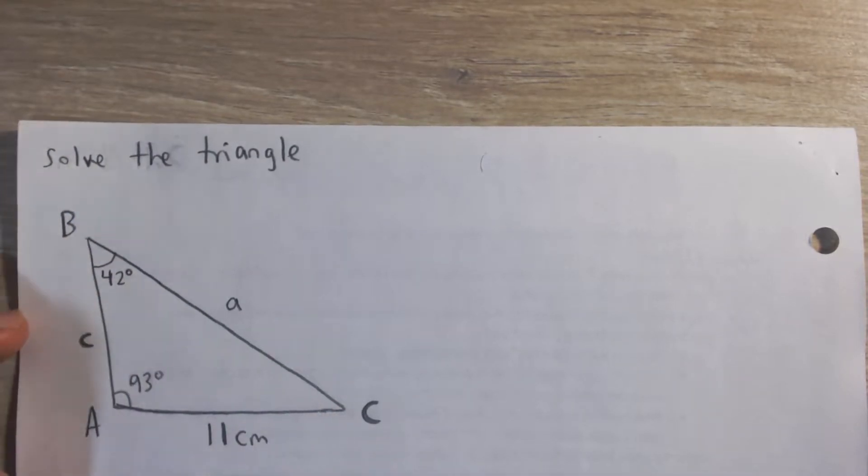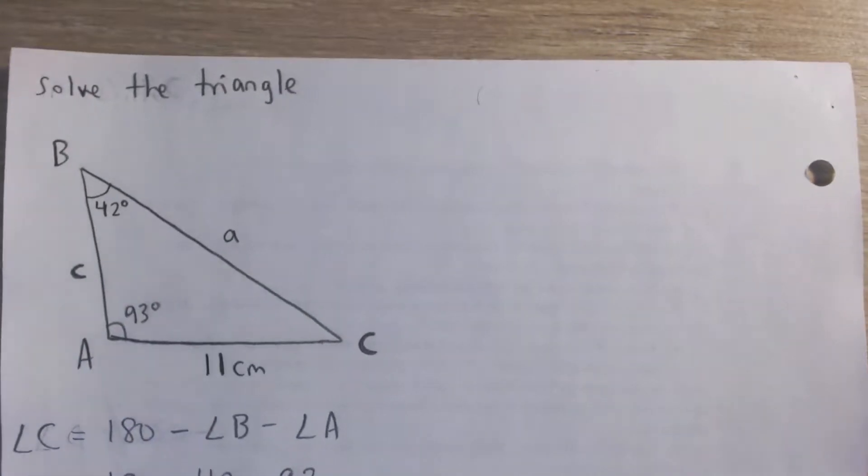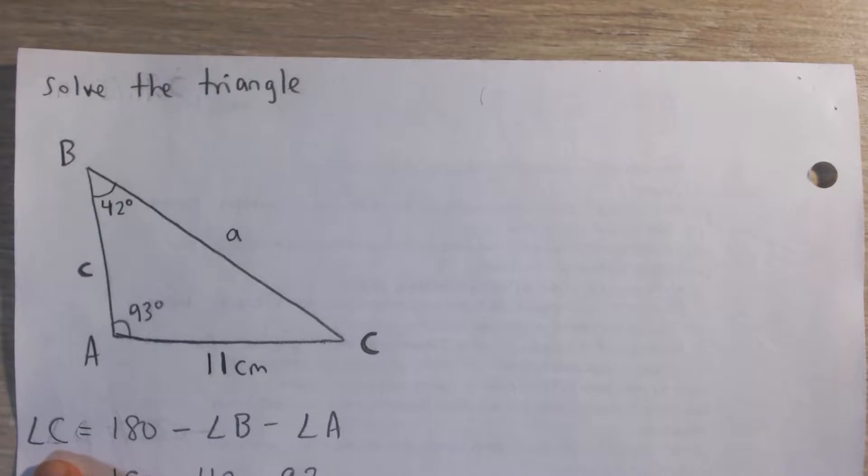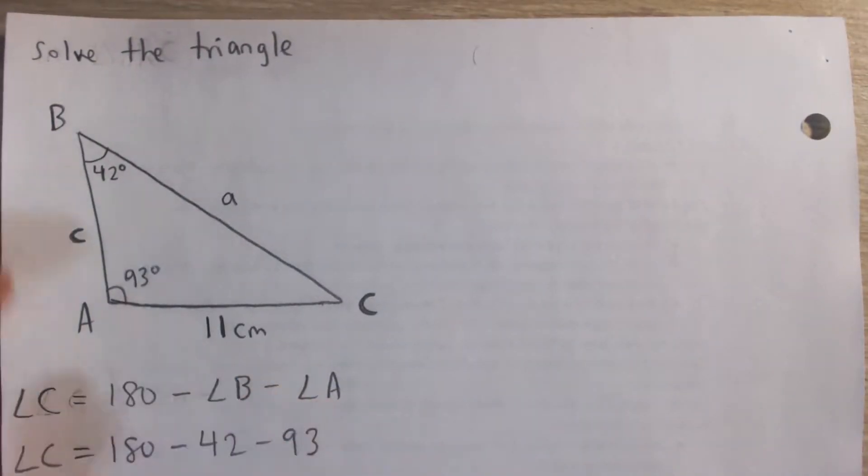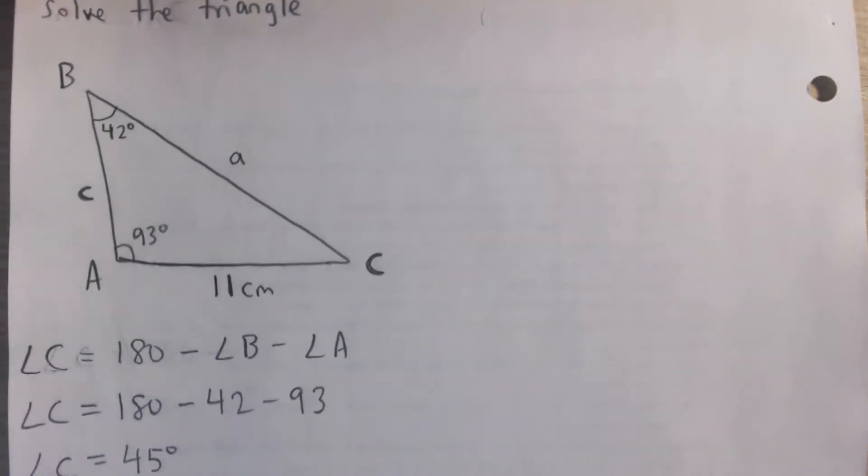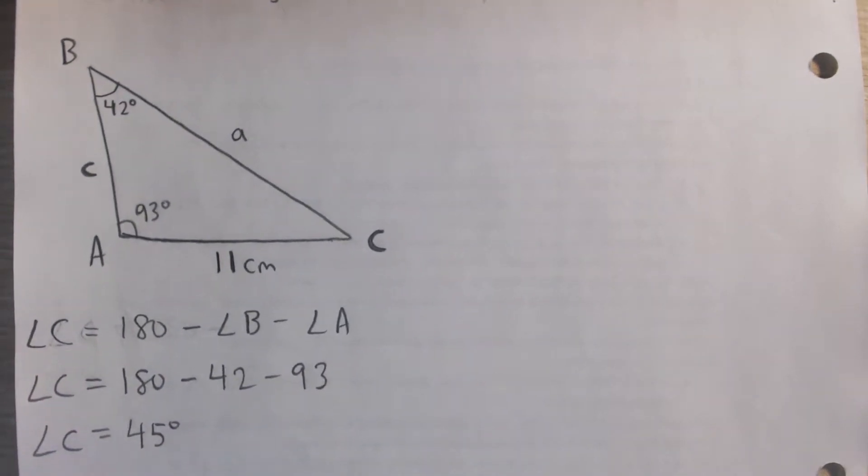We're given the other two angles, and we know that the sum of the angles of a triangle add up to 180 degrees. So angle C is 180 minus the other two angles. So 42 and 93, plug those in, and we can see that angle C is 45 degrees.